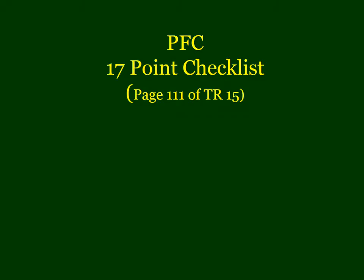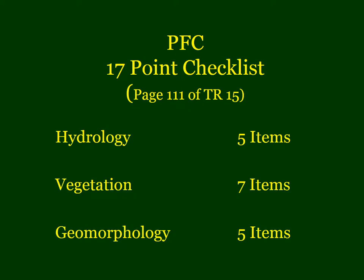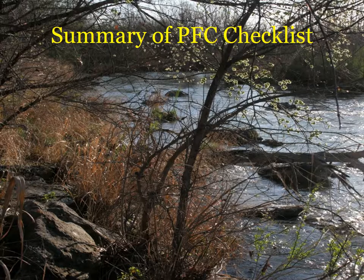I want to go through the PFC method very quickly. It's a 17-point checklist. You will find this checklist on page 111 of the TR-15 publication. There are five items relating to hydrology, seven items relating to vegetation, and five items relating to geomorphology.